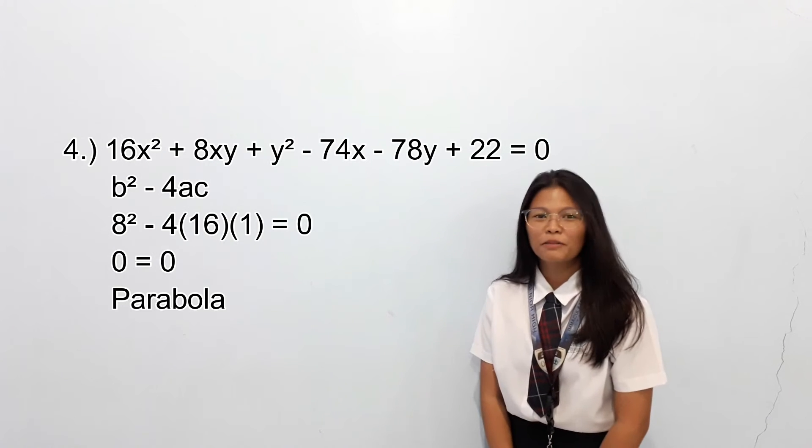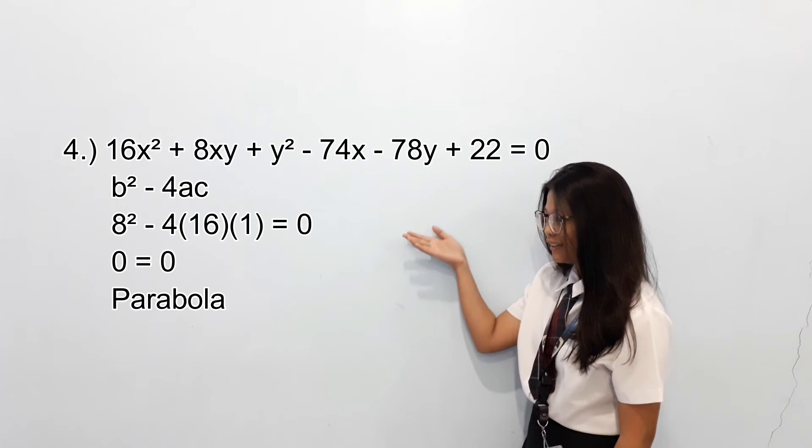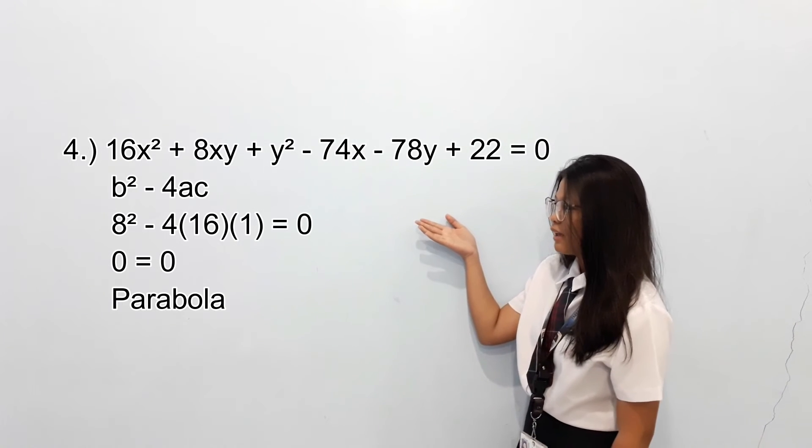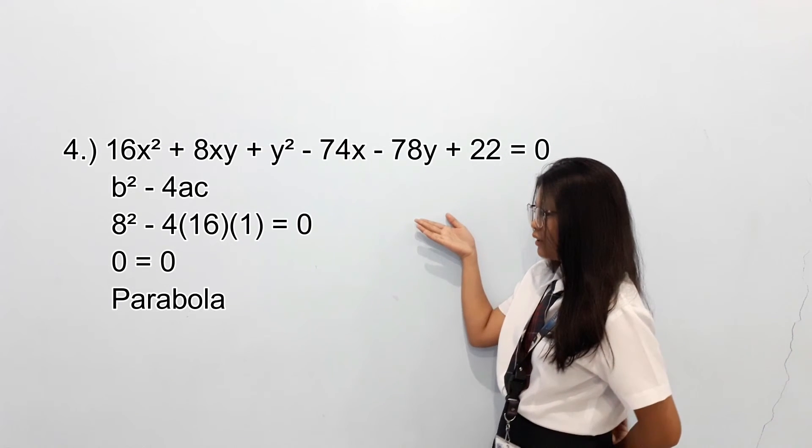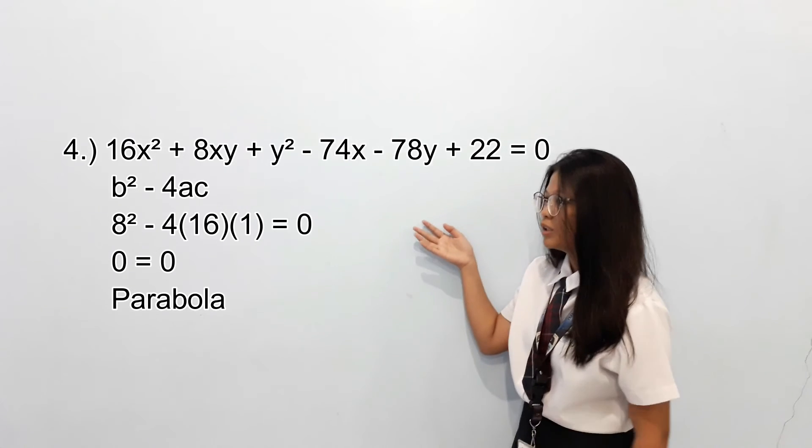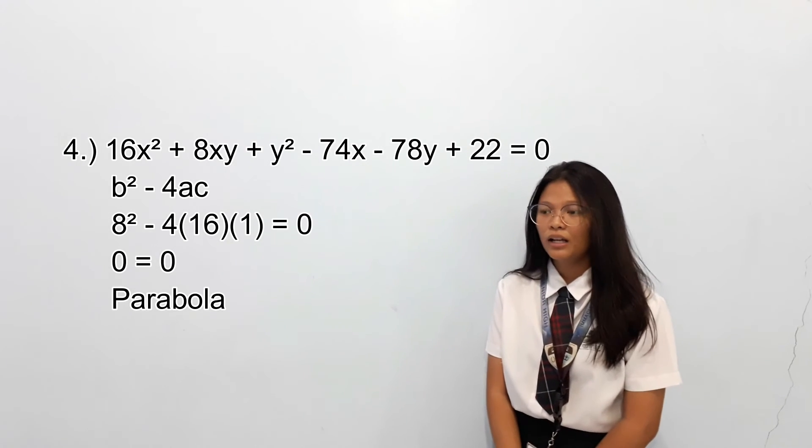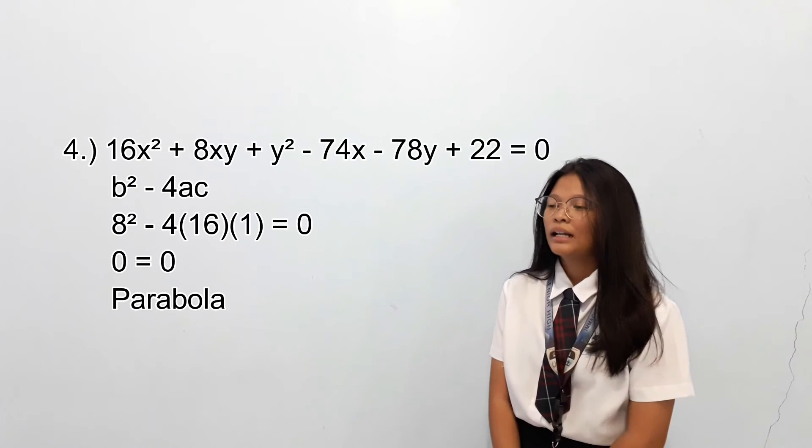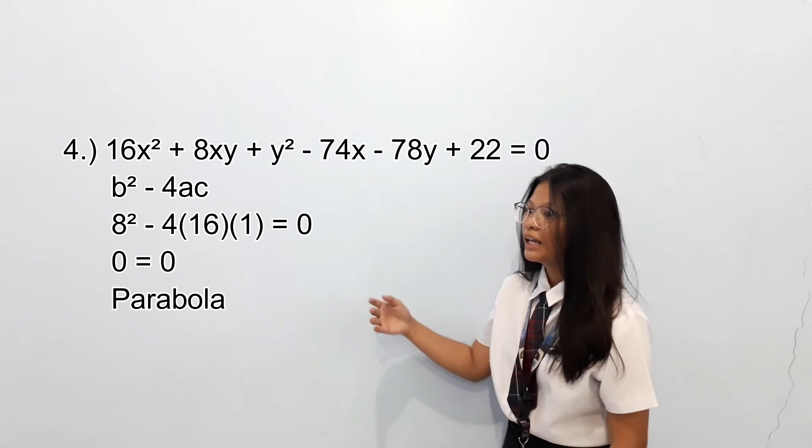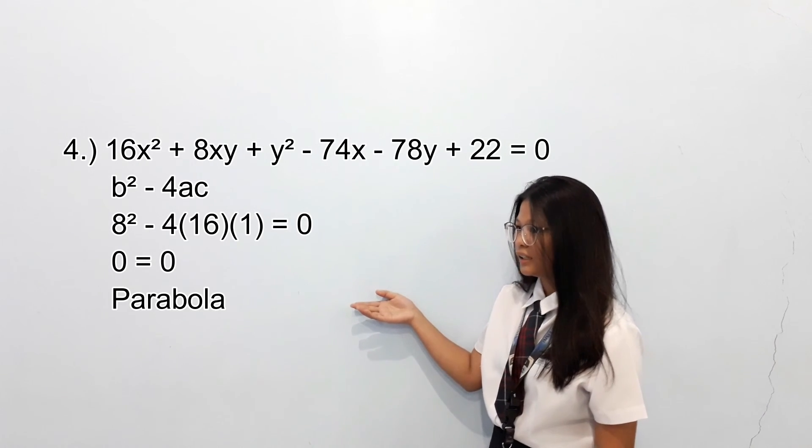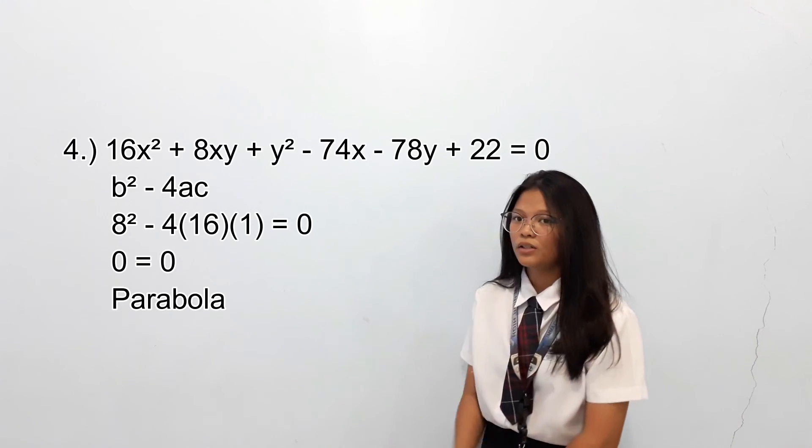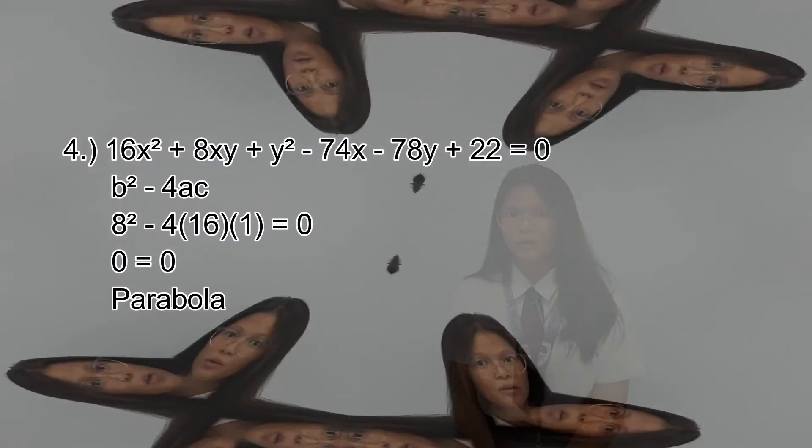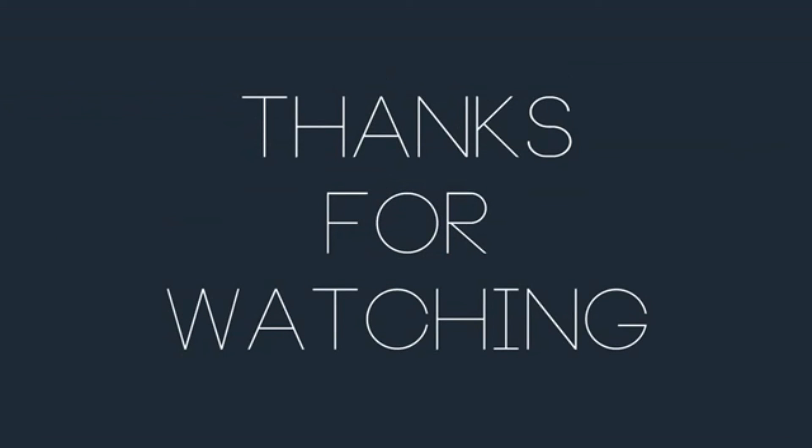Question number four: 16x² + 8xy + y² - 74x - 78y + 22 = 0. B² - 4AC: 8² - 4(16)(1) = 0. The answer is parabola because this is equal to zero. Thank you.